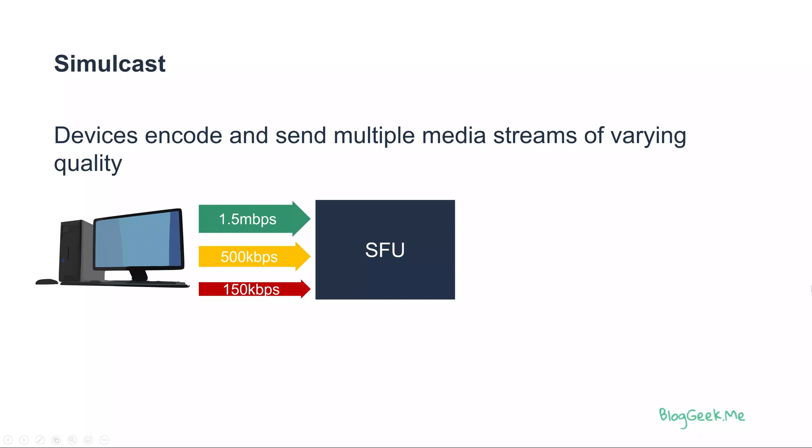So what is Simulcast exactly and how does it work? Simulcast is used for multi-party calls. In Simulcast, the originating device that broadcasts the data sends more than a single media stream towards the SFU, the Selective Forwarding Unit.